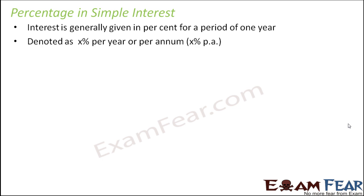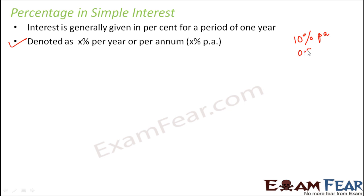Interest is denoted as X percent per year, or per annum, written as X percent per annum. The interest rate could be 10% per annum, it could be 0.5% per annum — it could be anything. Per annum means per year, so every year you have to give 10% interest. This 10% is calculated on the principal — that is, the amount of money that the bank gave you.